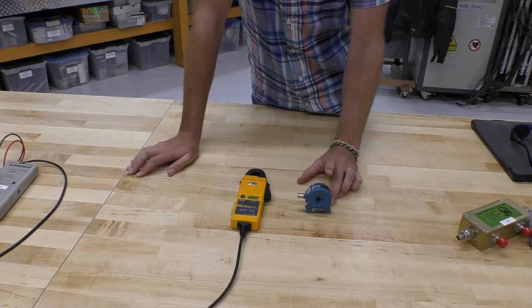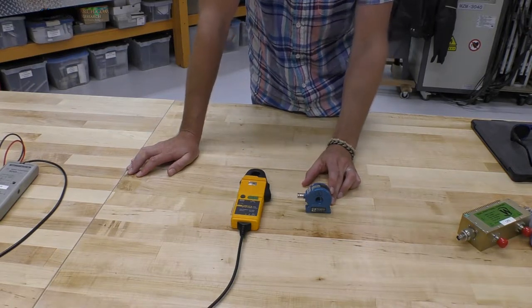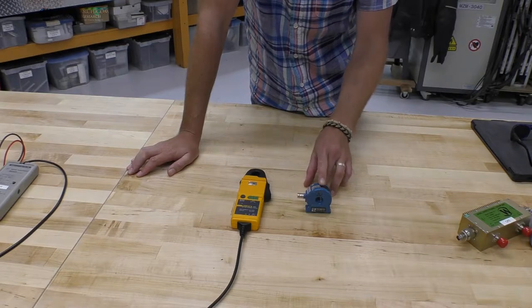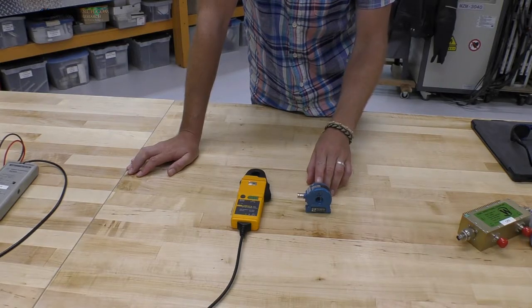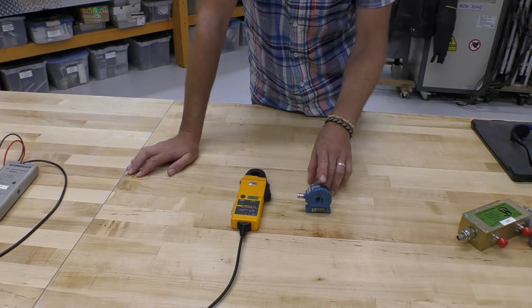And this is where we would move across to a much better current probe. This is a Stangene's probe. So this one, I've actually calibrated using the thermal power probe up to about 10 megahertz.